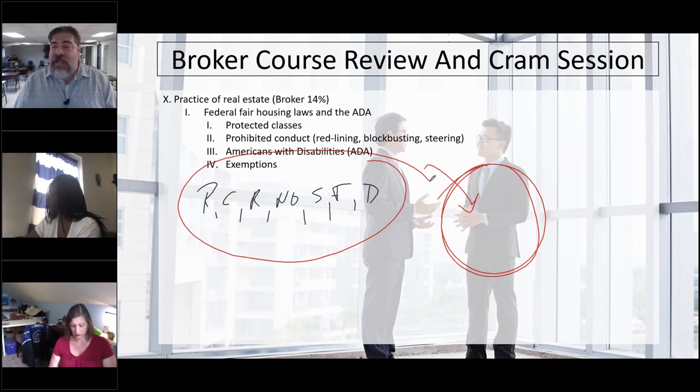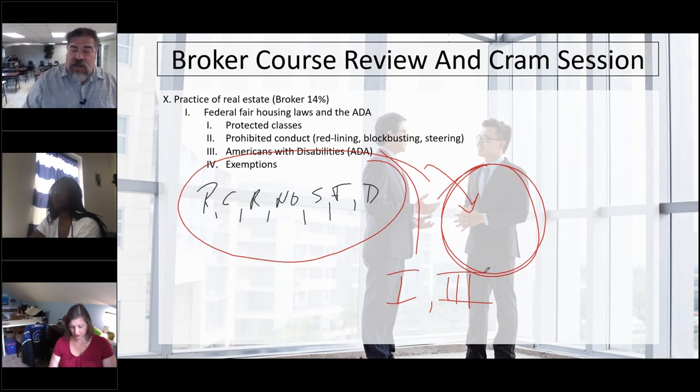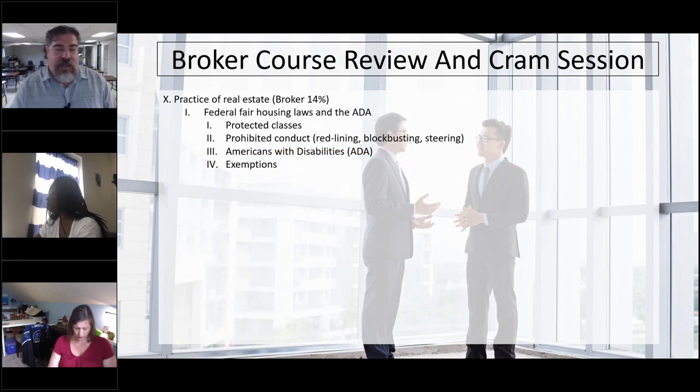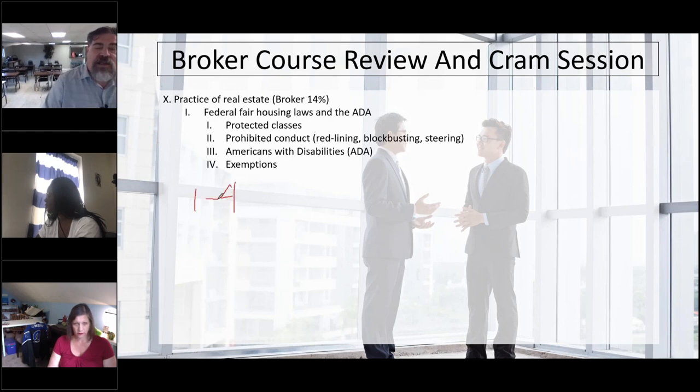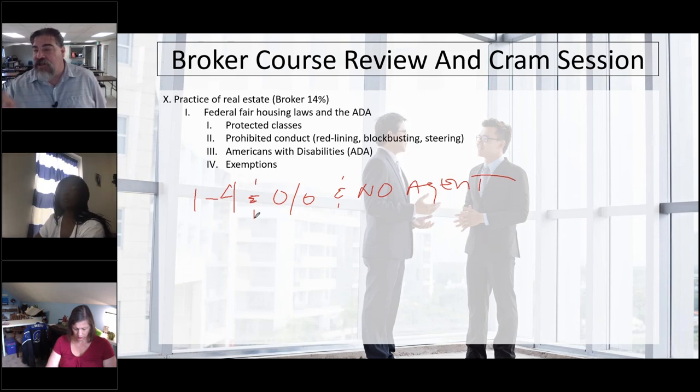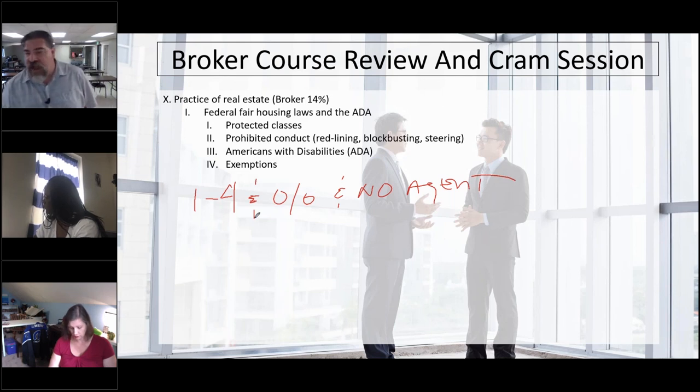The Americans with Disabilities Act. There are exemptions to the fair housing. The exemption to the fair housing is going to be anything with four or less that is owner-occupied and no agent. So a single-family home up to four units that is owner-occupied and there's no agent being used could potentially be an exemption to the fair housing act.